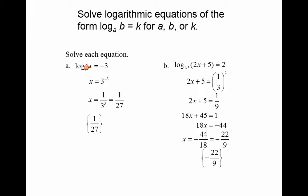In the first example, we have log base 3 of X equal to negative 3. As you recall, we can convert log base B of X equal to Y into its exponential form by taking the base B, raising it to the power of Y, which equals X. So we take base 3 raised to the power of minus 3, which equals X. So X equals 3 to the power of minus 3, which is 1 over 3 cubed, equal to 1 over 27. All we did was convert the logarithm to its exponential form to solve for X.